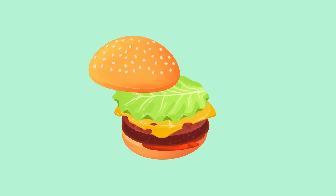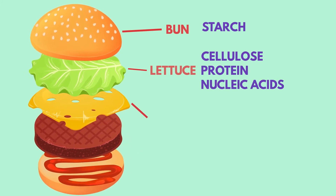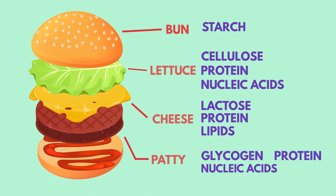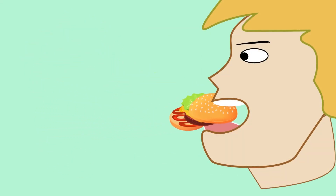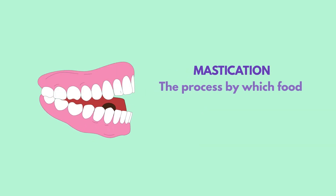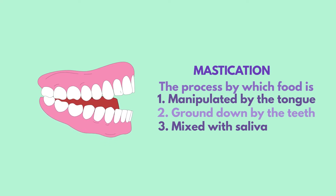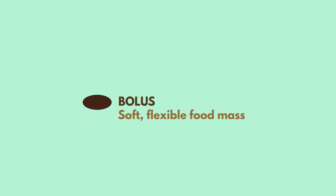We will begin with the ingestion of a cheeseburger, which has a bun with starch, lettuce with cellulose, proteins, and nucleic acids, cheese with lactose, proteins, and lipids, and a beef patty with glycogen, proteins, nucleic acids, and lipids. Upon entering the mouth, the cheeseburger is masticated, or chewed, by the teeth. This form of mechanical digestion is important because food is manipulated by the tongue, ground down by the teeth, and mixed with saliva. Mastication breaks the food down into small, soft pieces collectively referred to as a bolus — a soft, flexible food mass that can then be easily swallowed.